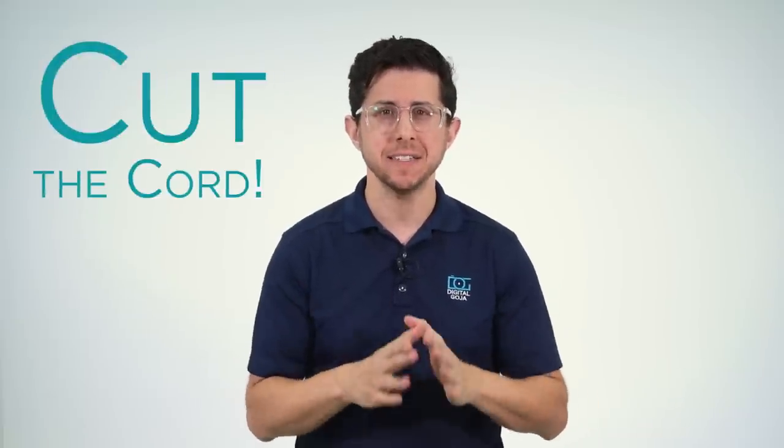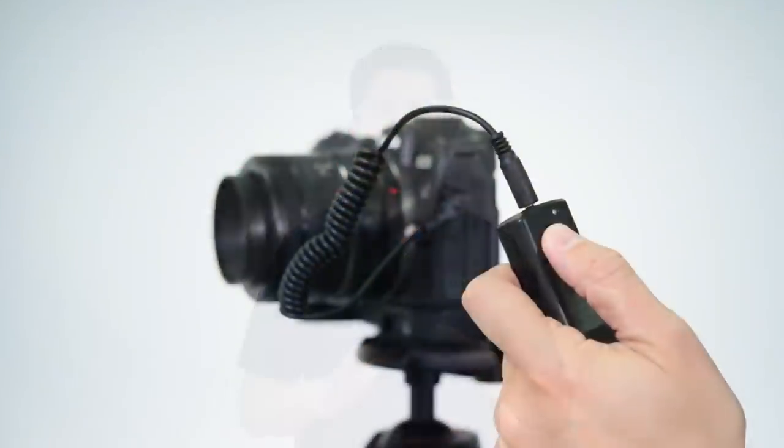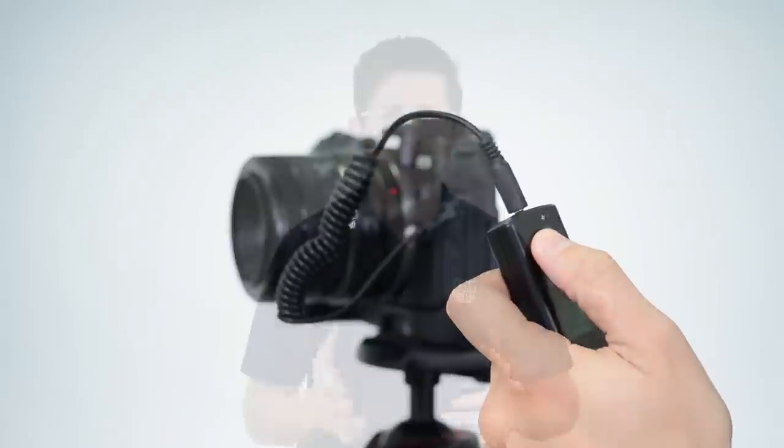Technology is making photography easier in a lot of ways. Cables connected everything, like this trigger, but that's getting better with Wi-Fi and Bluetooth options. I'm going to show you how to cut the cord using Canon's Camera Connect app.